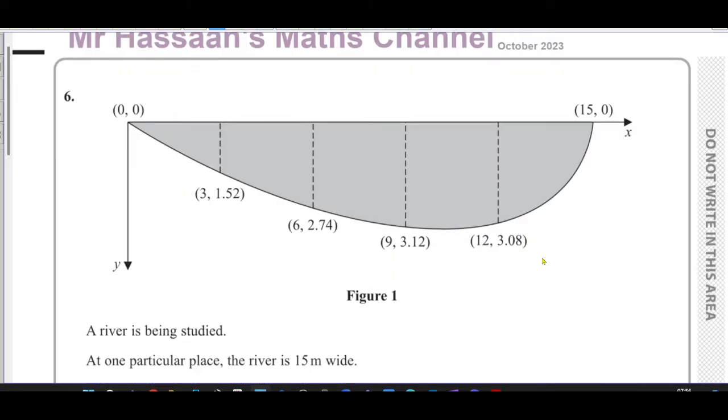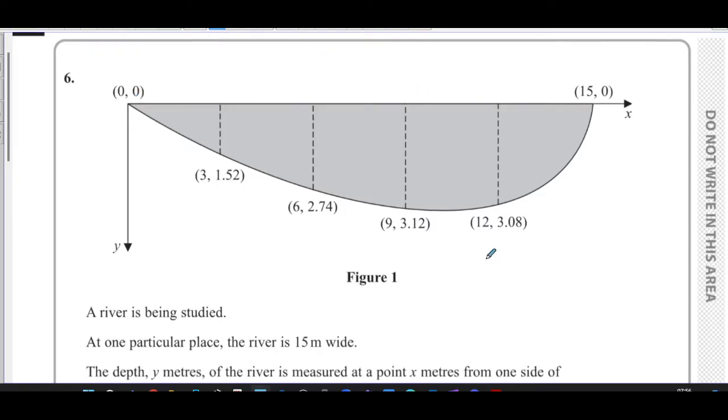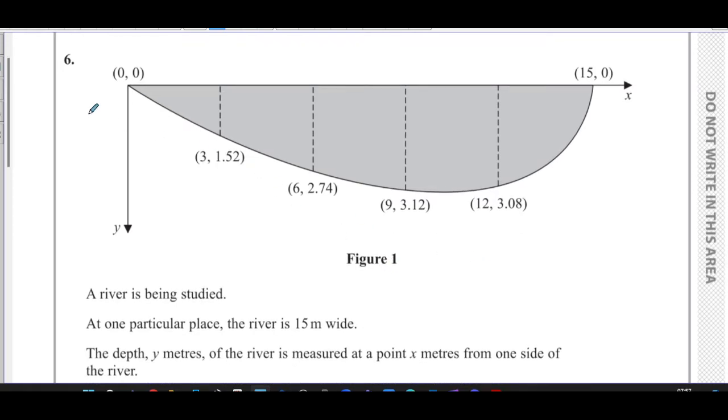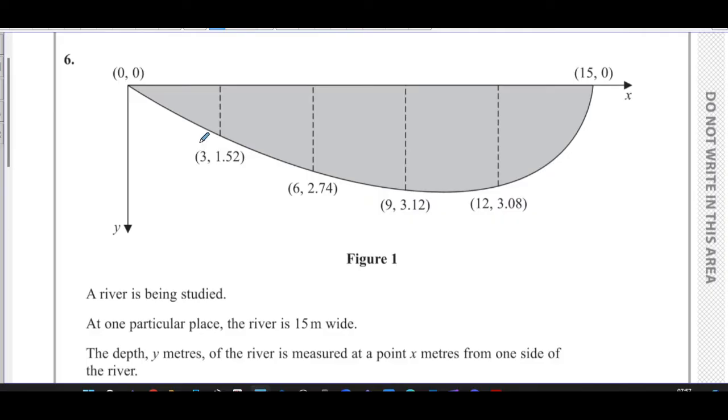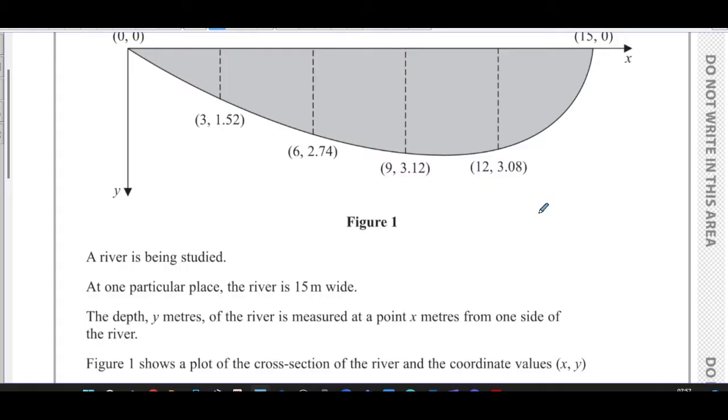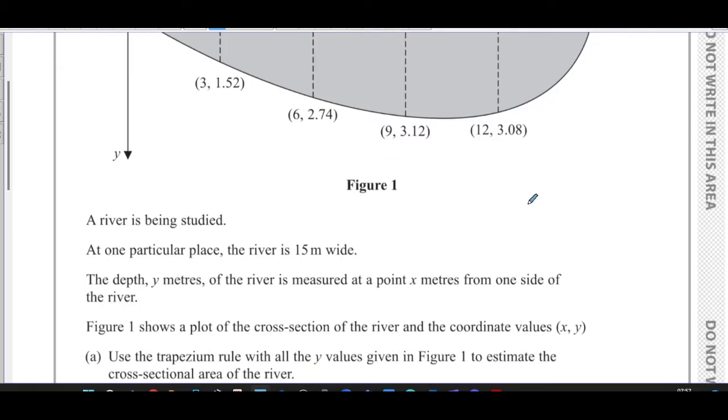It says a river is being studied. At one particular place, the river is 15 meters wide. The depth y meters of the river is measured at a point x meters from one side of the river. Figure one shows a plot of the cross section of the river and the coordinate values x, y. So these are different points along the river. These are the widths and these are the depths, the y coordinates are the depths of the points of the river.